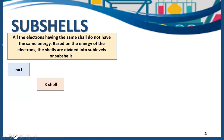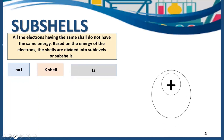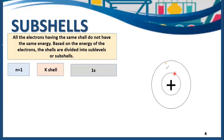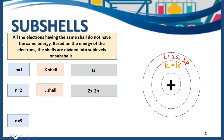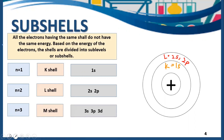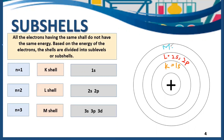When n equals 1, it is the K shell, and K shell has only one subshell: 1s. When n equals 2, we have L shell, and L shell has two subshells: 2s and 2p. When n equals 3, it is M shell, and M shell has three subshells: 3s, 3p and 3d.